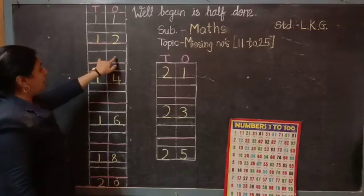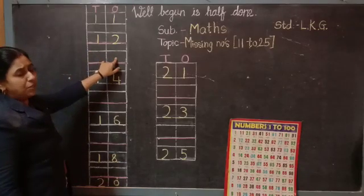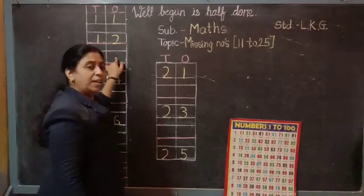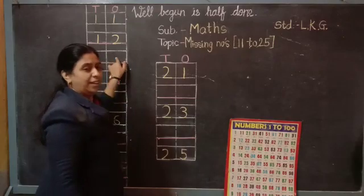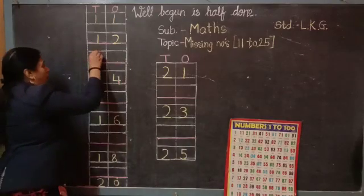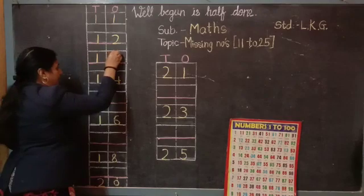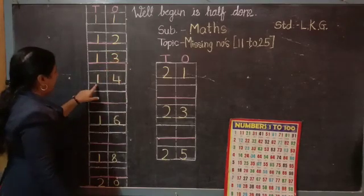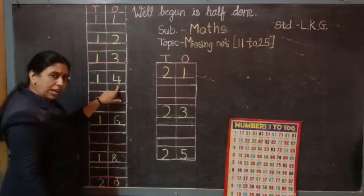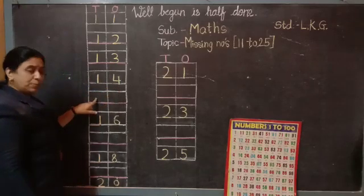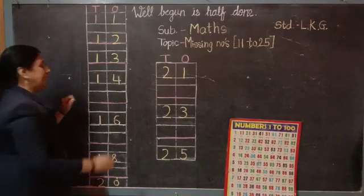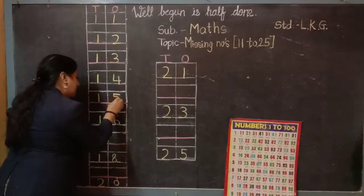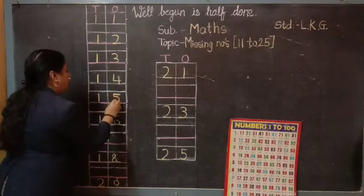After this, which number will come here? Which number is missing? Who will tell me? Yes, very good. 1-3, 13. After 13, 1-4, 14 is here. Again, which number is missing here? Yes, 1-5, 15. Number 15 is missing here.